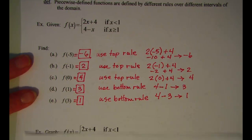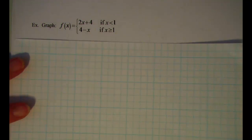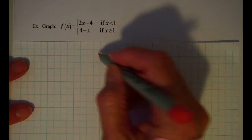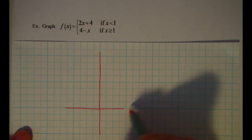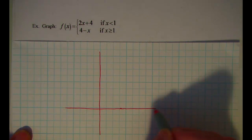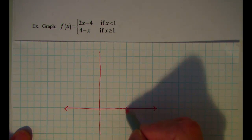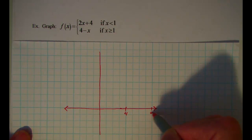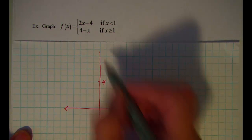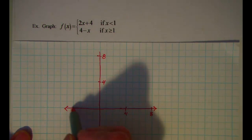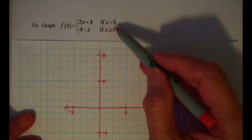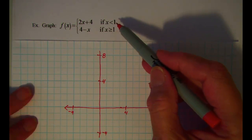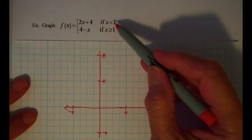We can also graph piecewise-defined functions. What we have to keep in mind is this barrier that we change rules on: the left side of 1 and on the right side of 1.